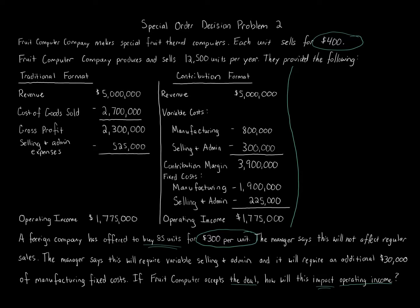We need to look at exactly what goes into this calculation. We're going to look at the impact to operating income — specifically whether it goes up or down — using a differential analysis on the side. We have the information in both the traditional format (revenue minus cost of goods sold minus selling and administrative) and the contribution margin format (revenue minus variable costs minus fixed costs), which makes the calculation faster.